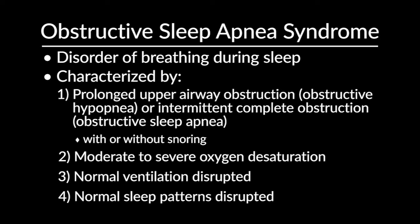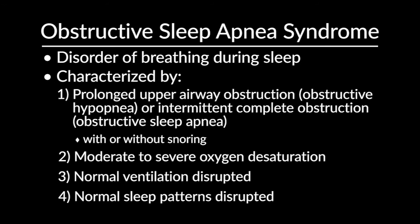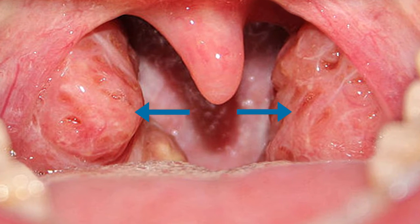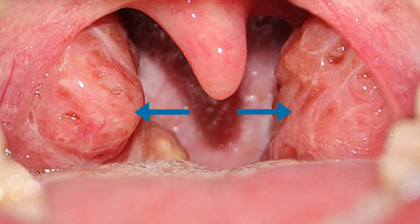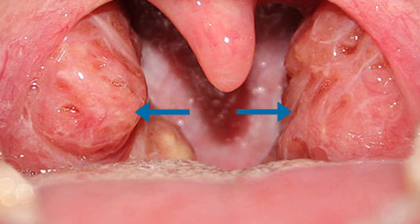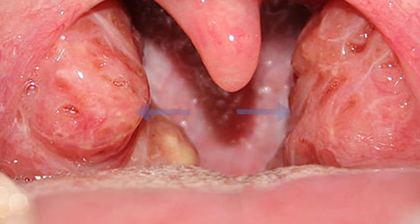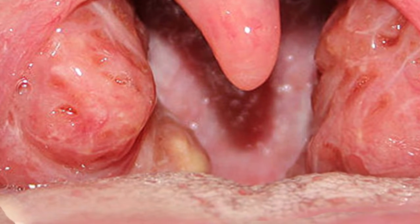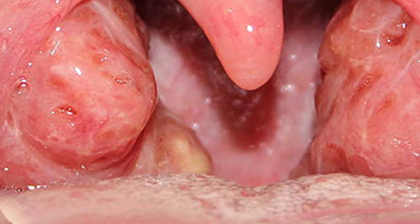Now in children, obstructive sleep apnea syndrome is oftentimes caused by enlarged adenoid or tonsillar tissue. You can see in this illustration that the hypertrophied tonsils really do get in the way of normal airflow.